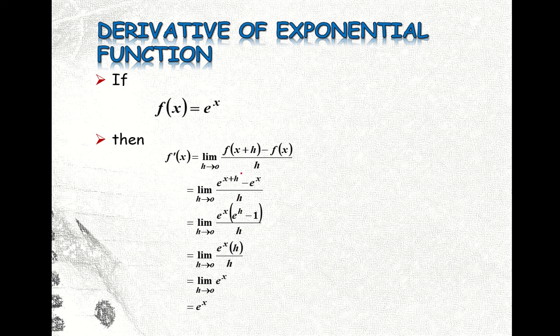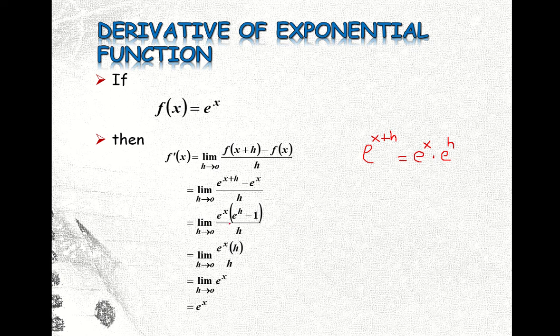Then we have here the common is e to the x, because e to the x plus h, from the law of exponent, this can be written as e to the x times e to the h. So that's why we have a common here, e to the x, so change this e to the x plus h into this one.